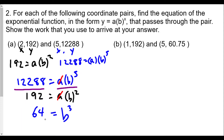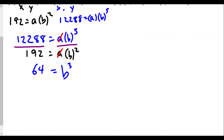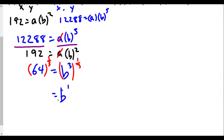So now with 64, we want to find the value of b when raised to the third power equals 64. What number raised to the third power is 64? On our calculator, we raise both sides to the one-third power — the reciprocal of the exponent. So b to the third raised to the one-third: multiplying exponents, three times one-third is one. And 64 to the one-third power, or the cube root of 64, equals 4. So we found our b value is 4.